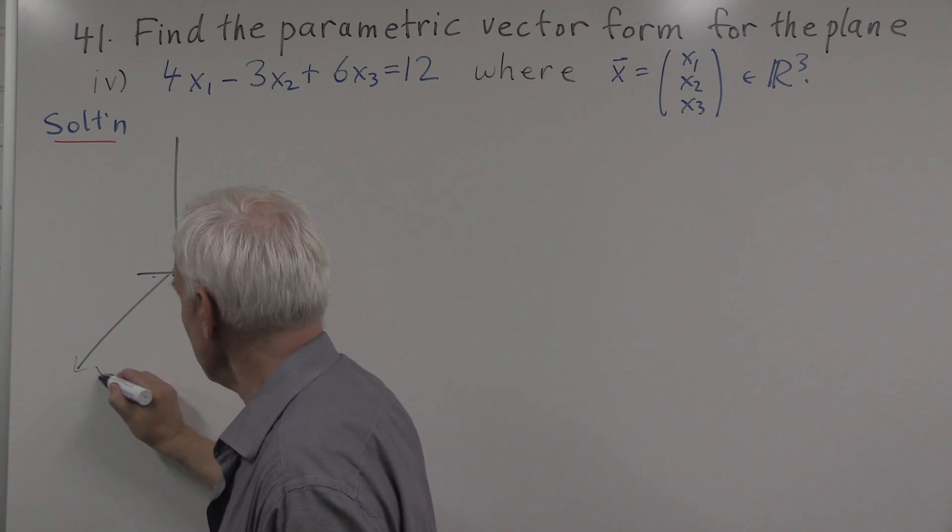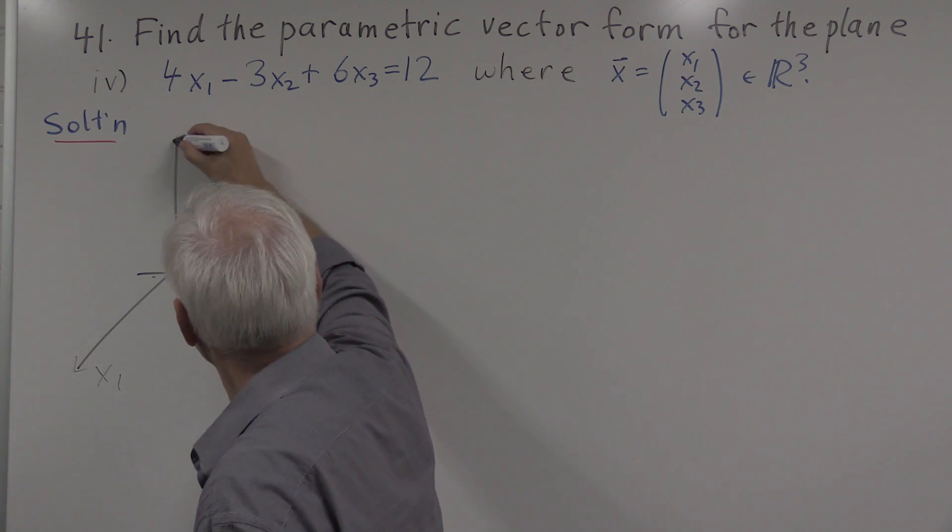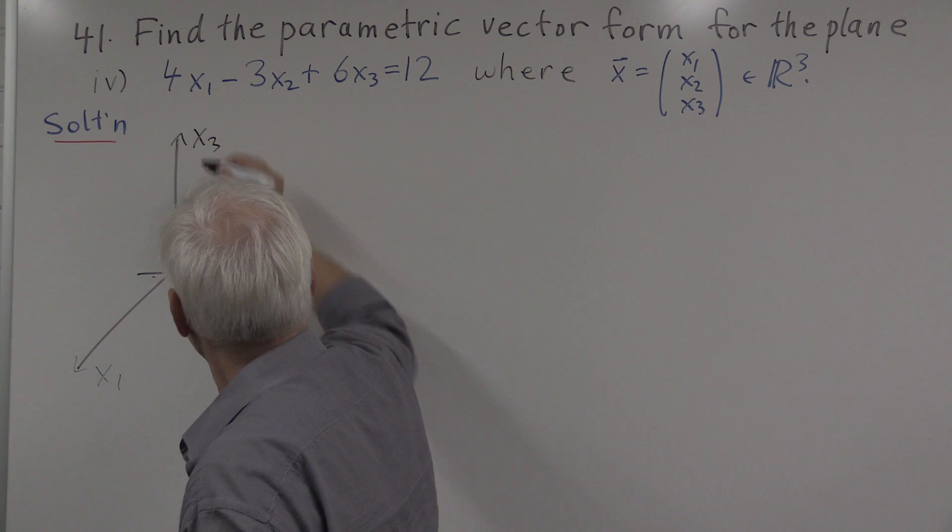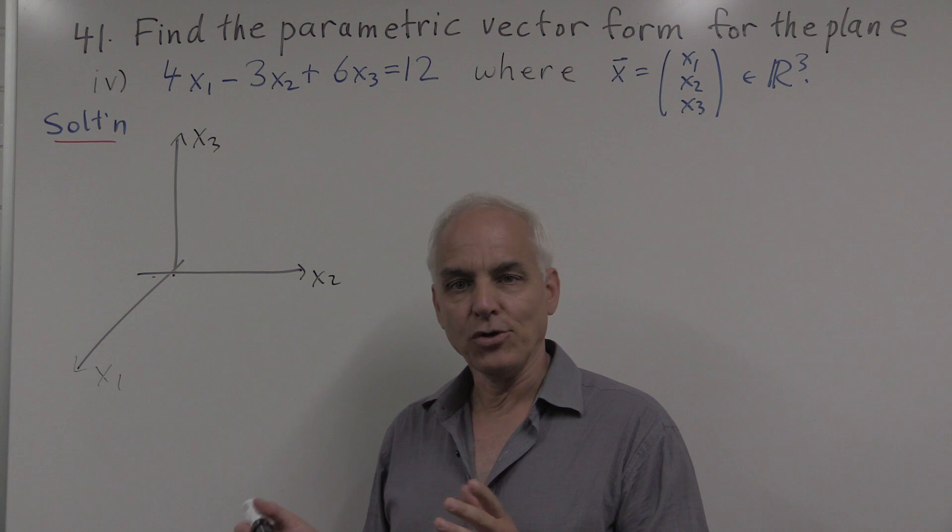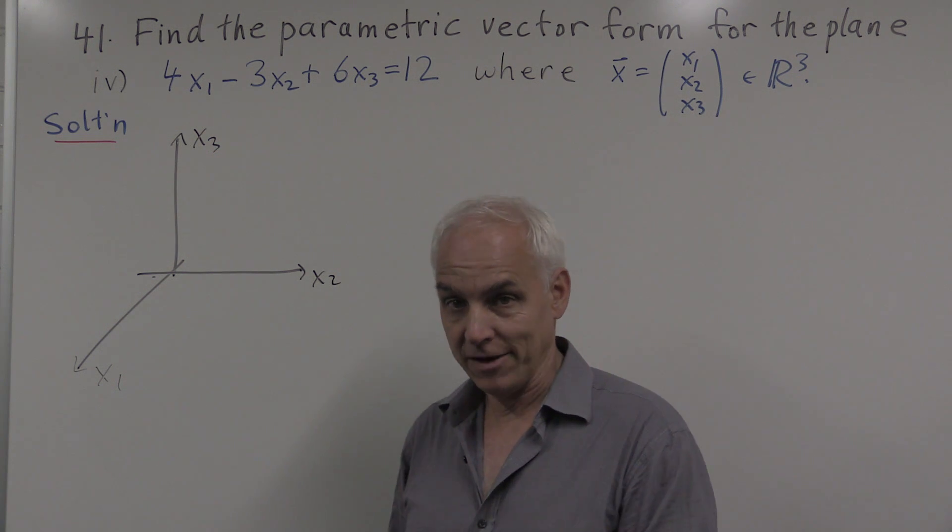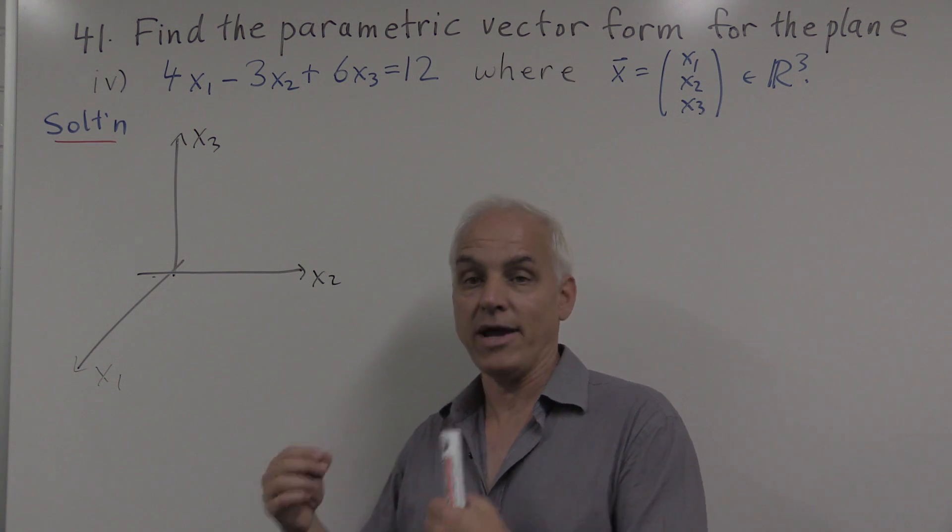So here the axes would properly be labeled x1, x2, and x3. And you might ask how would we represent such a plane? Well the strategy would be to look at it the same way you look at a line in the plane. A way of drawing a line in a plane is to find the x and y intercepts.